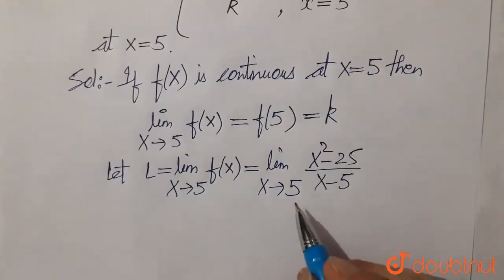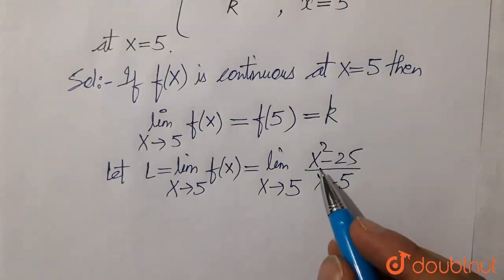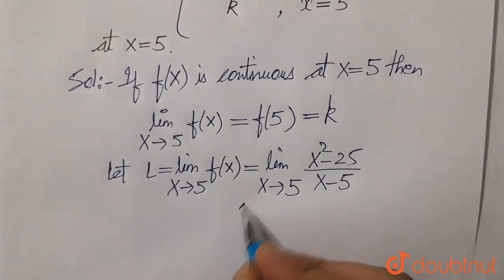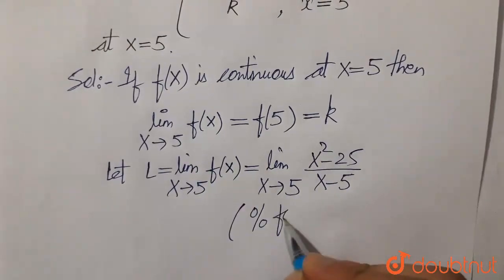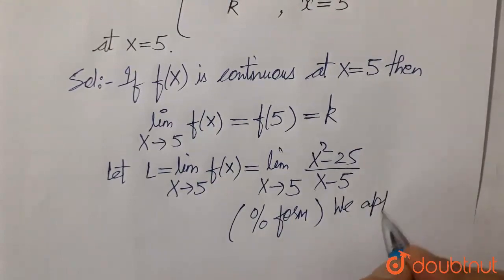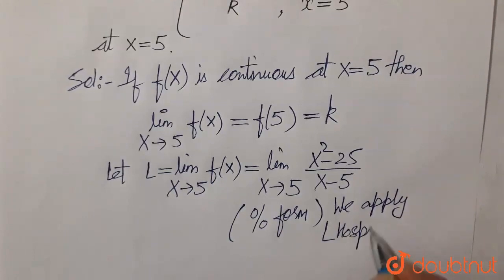Now, on putting x equals 5, it becomes 25 minus 25 divided by 5 minus 5. That is a 0 by 0 form, so we apply L'Hospital's rule here.